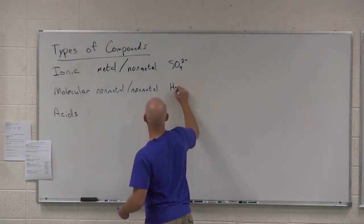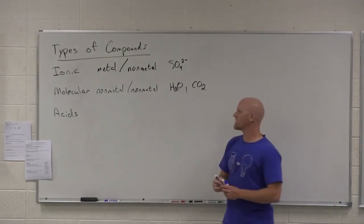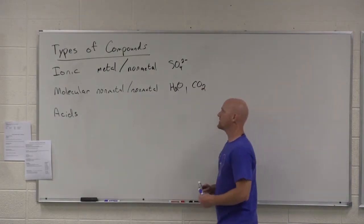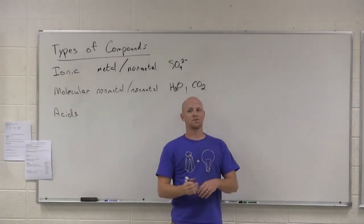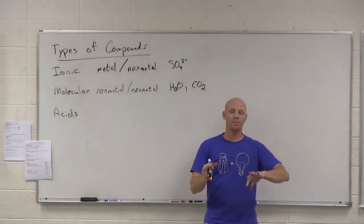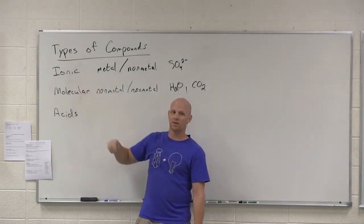So a good example would be like water, carbon dioxide, so on and so forth. We call these molecular because these are the ones that actually exist as molecules. So this is tricky because not all compounds exist as molecules. So if I have an ionic compound, it will not exist as a molecule.